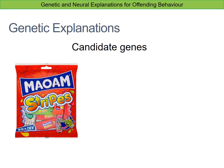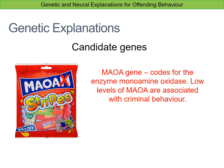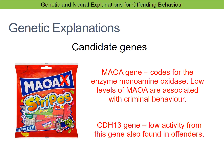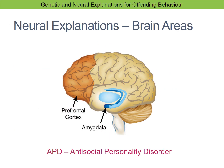Two genes have been particularly isolated. The first is the MAOA gene, which codes for an enzyme called monoamine oxidase. Low levels of MAOA are associated with criminal behavior. The second candidate gene is CDH13, and low activity from this gene has also been found in offenders.